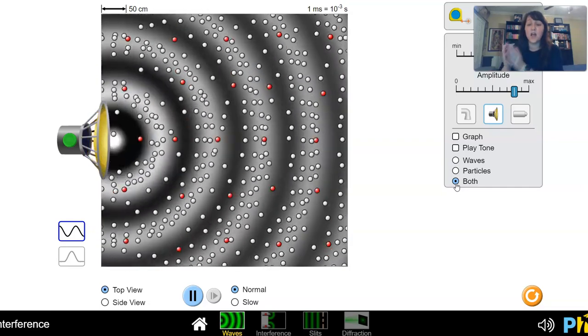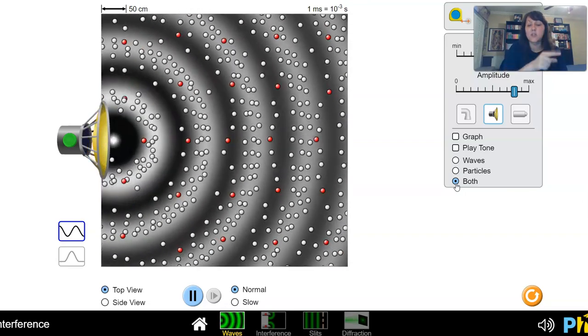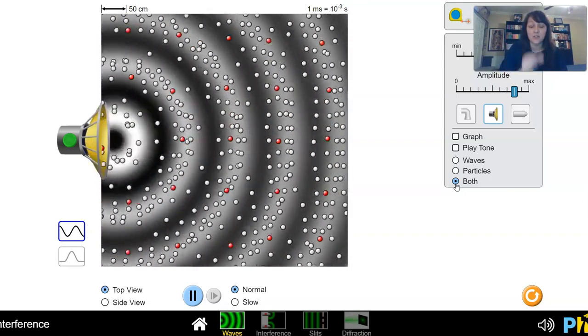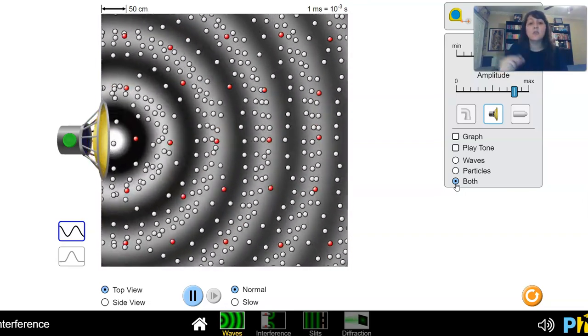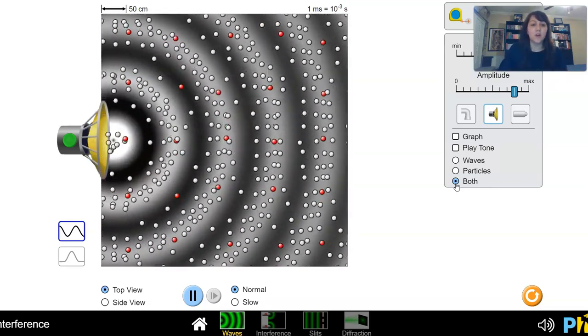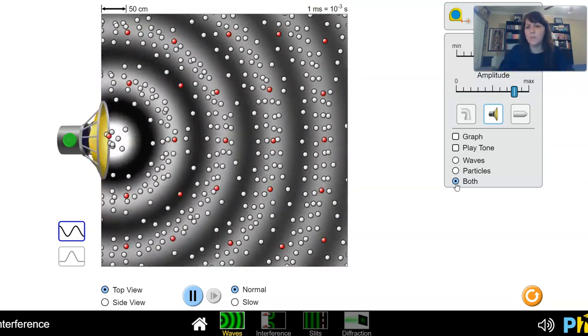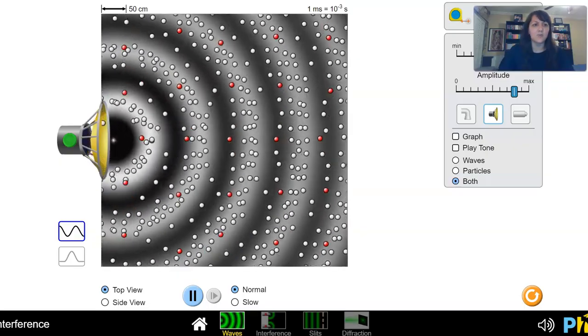Those are the compressions of the sound wave as they move through those air particles. And then in the places where we don't have those white wave fronts there, the black spaces in between, those represent our rarefactions where we have fewer particles, all right?